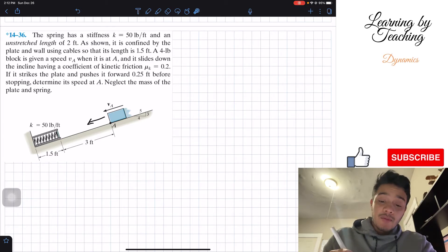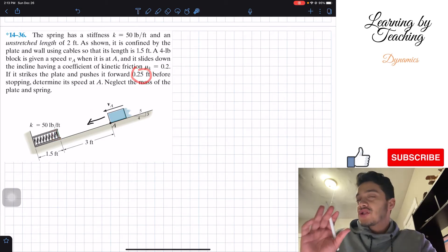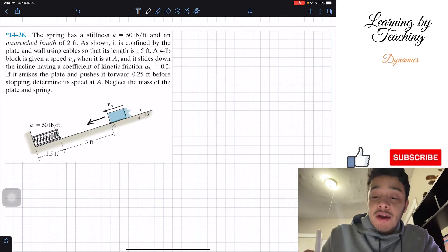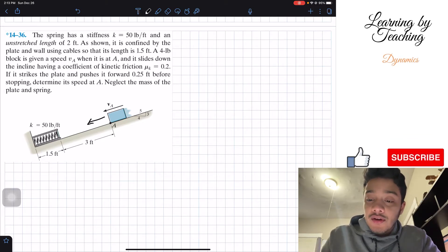Alright, so basically what we're given in here, we got our block has an initial velocity and it's going to hit the spring. And when it hits the spring, it's going to compress it by 0.25 feet just right before stopping. So the first thing that I like to do in these problems is write out my givens since there are so many.